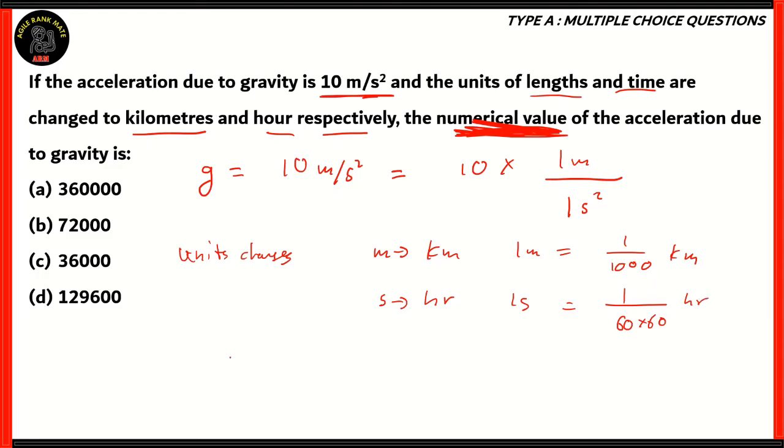So, when it comes to the acceleration due to gravity now, it will be 10 times 1 over 1,000 times 1 over 60 into 60 squared. Now, 60 times 60, if you do the math, it will get 3,600, and since this fraction is in the denominator, it will be converted. The denominator of the smaller fraction will go into the numerator.